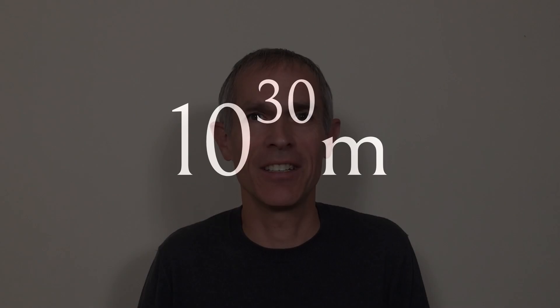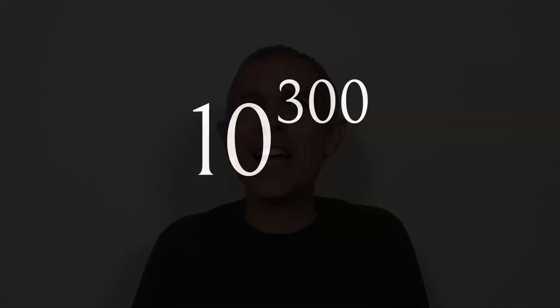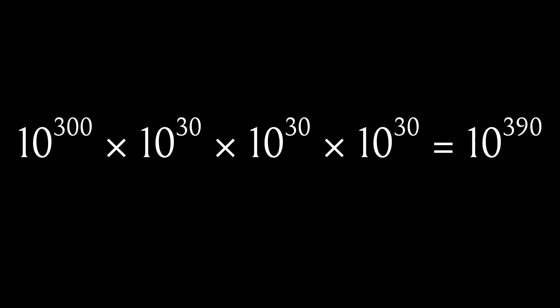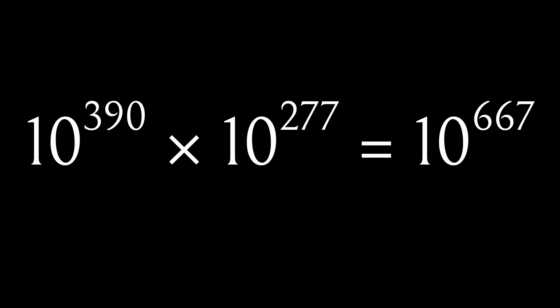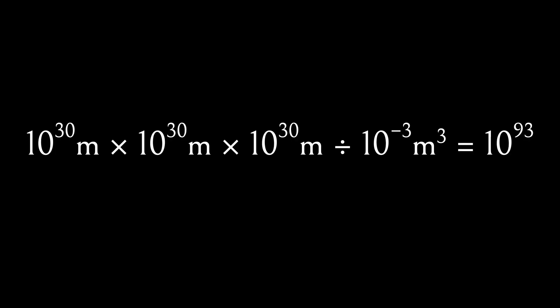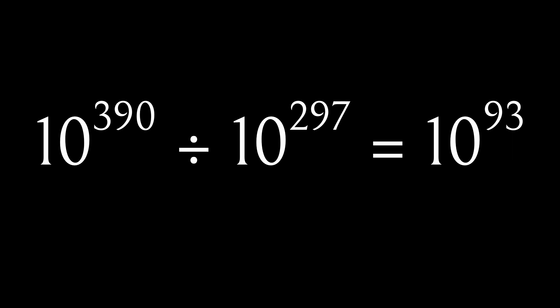Our universe is pretty big — it's roughly 10 to the power of 30 metres across. So if there are roughly 10 to the power of 300 edges in a space hopper, then there are roughly 10 to the power of 390 edges in the universe. Our universe is also roughly 10 to the power of 93 times the volume of my laptop, meaning there are roughly 10 to the power of 93 times the number of edges in our universe as in my laptop.